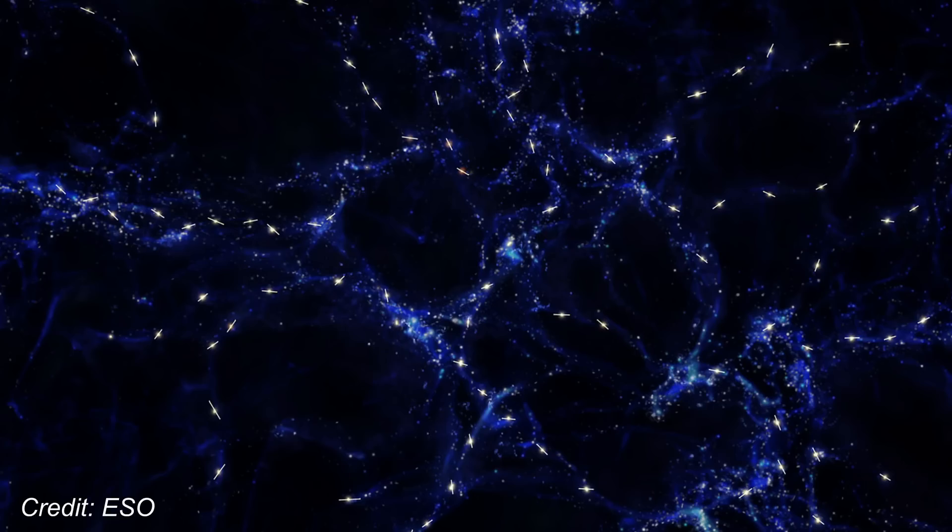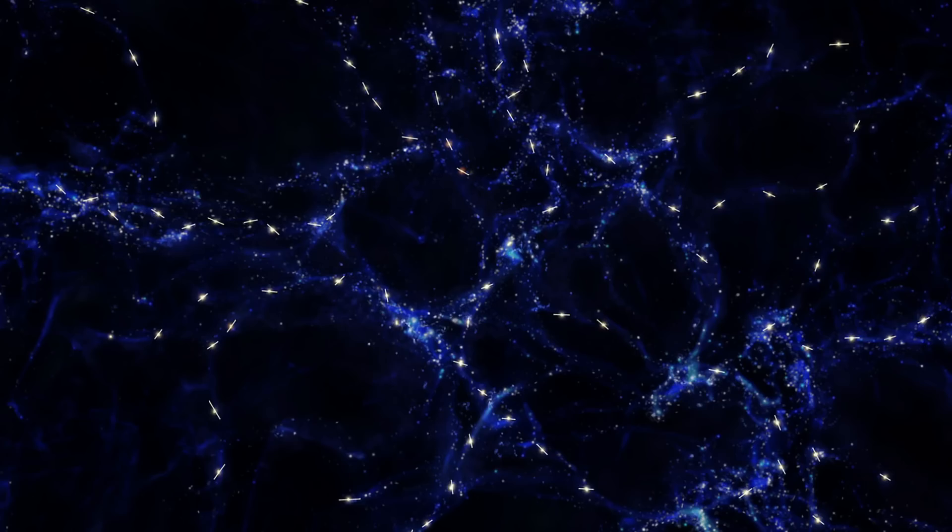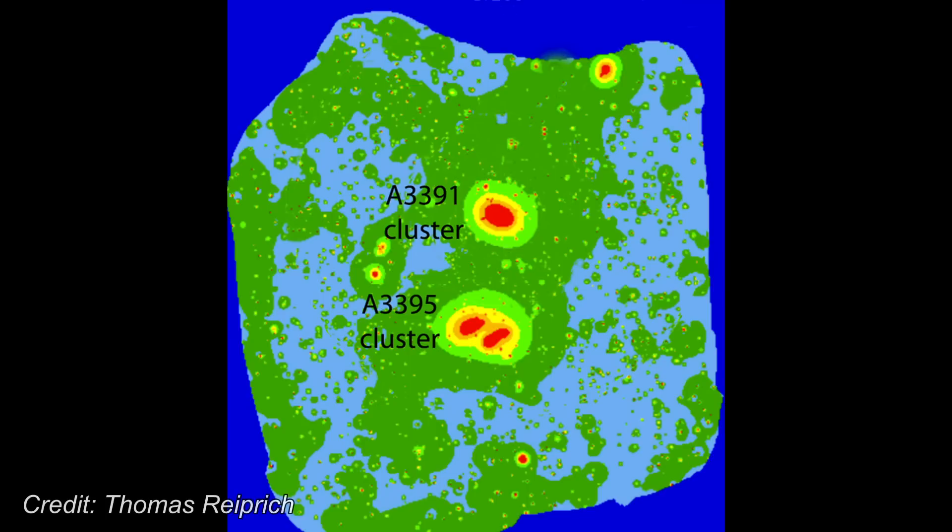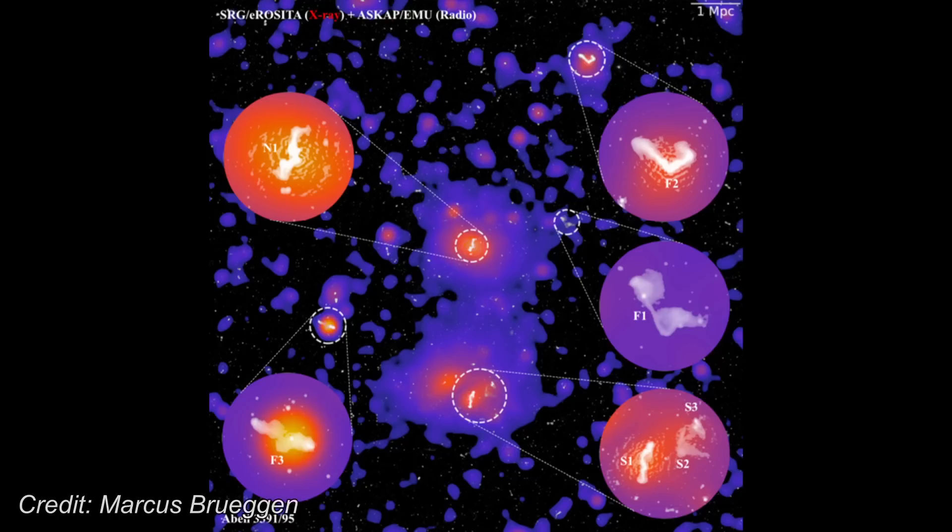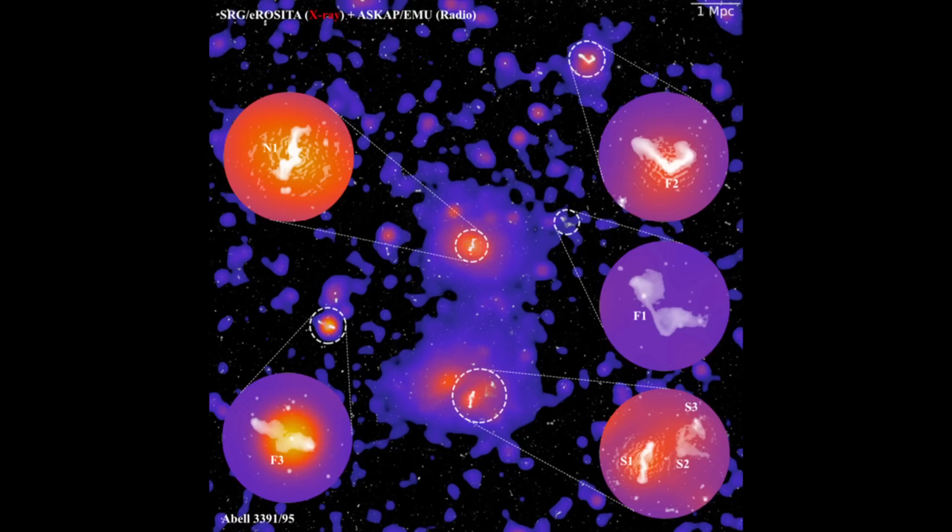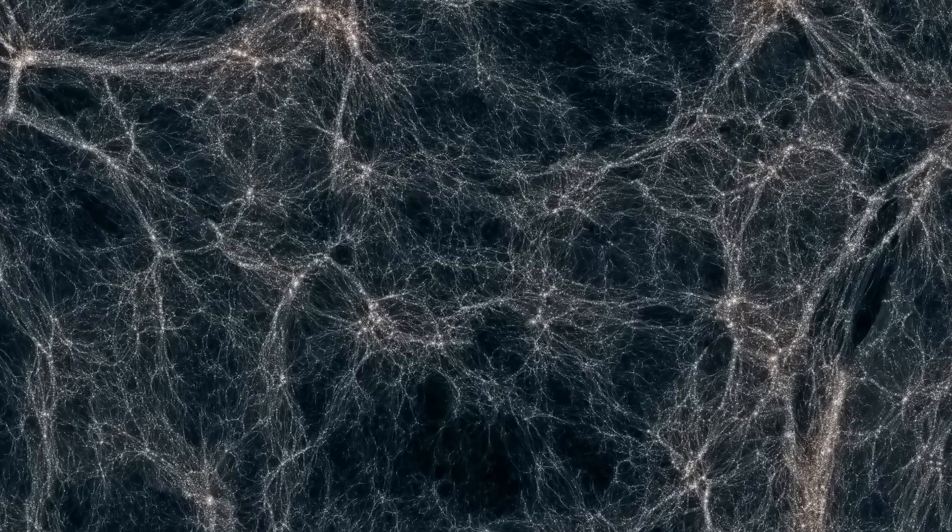For example, filaments in the cosmic web which connect galaxies are known to carry currents of plasma and exhibit strong magnetic fields. These characteristics could enable the kind of nuclear transmutations that LENR theorists propose, allowing for both the creation and modification of elements in a distributed fashion across the universe.